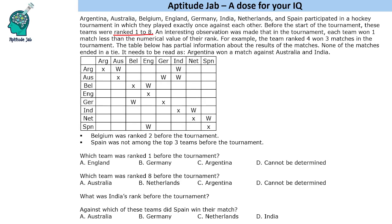For example, team ranked 4 will win 3 matches, team ranked 5 will win 4 matches, team ranked 2 will win 1 match, etc. The table below has partial information about the results. None of the matches ended in a tie.